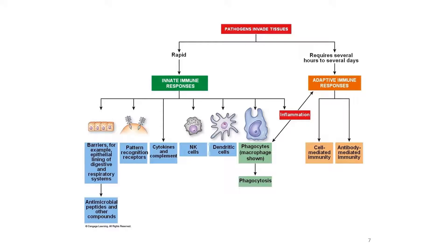The three defense systems — the first, second, and third lines — can also be classified into two categories: innate immune response and adaptive immune response. Innate immune response covers barrier defense and internal defense, involving pattern recognition receptors, cytokines, complement system, natural killer cells, dendritic cells, and phagocytosis. Adaptive immune response involves cell-mediated and antibody-mediated (humoral) immune response.